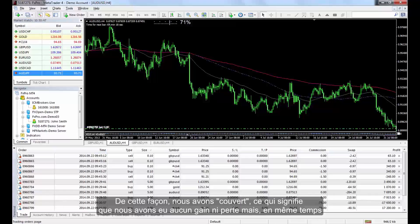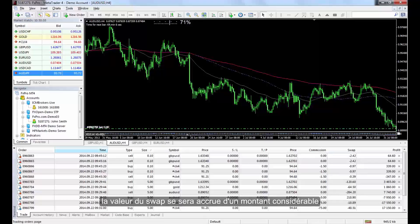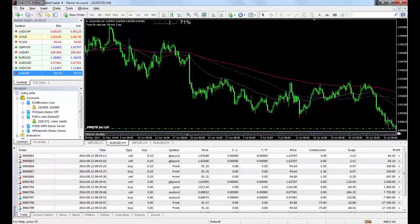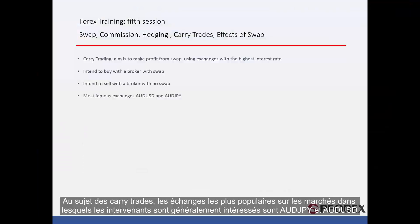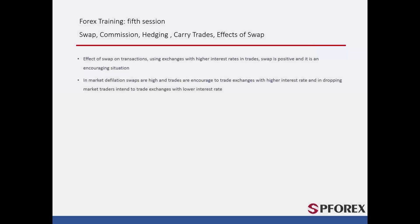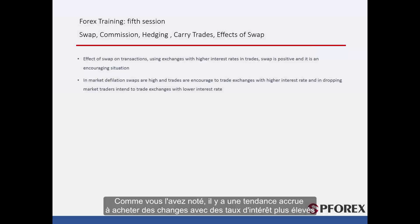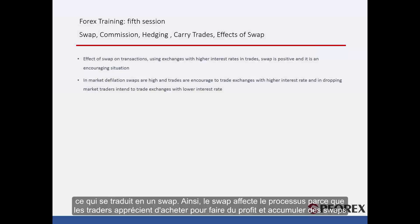In this way, we have hedged — meaning we have made no gain or loss — but in time, the size of the swap will increase to a considerable amount. Considering carry trades, the most famous exchanges that parties are usually interested in are Australian dollars against Japanese yen, and Australian dollars against US dollars. As you noticed, there is a greater tendency to buy exchanges with higher interest rates, which results in a swap.